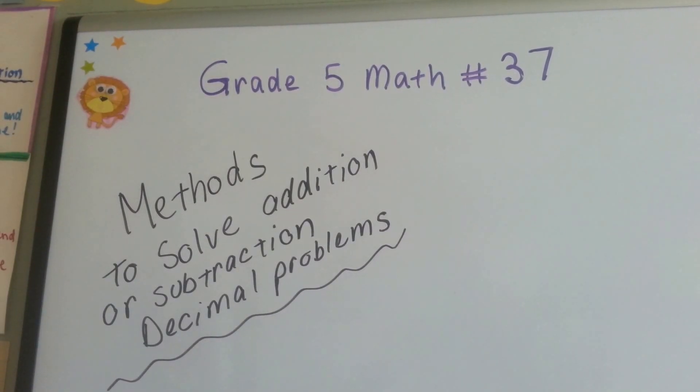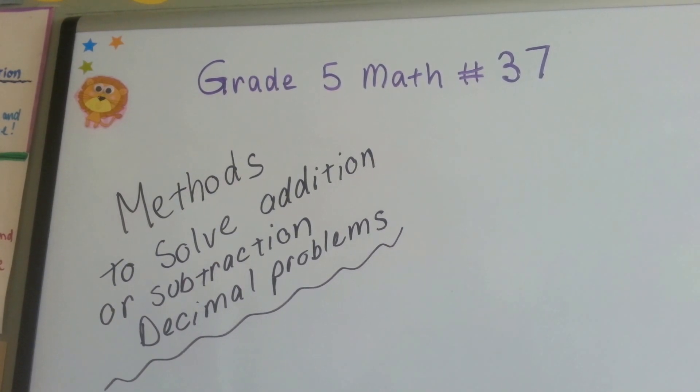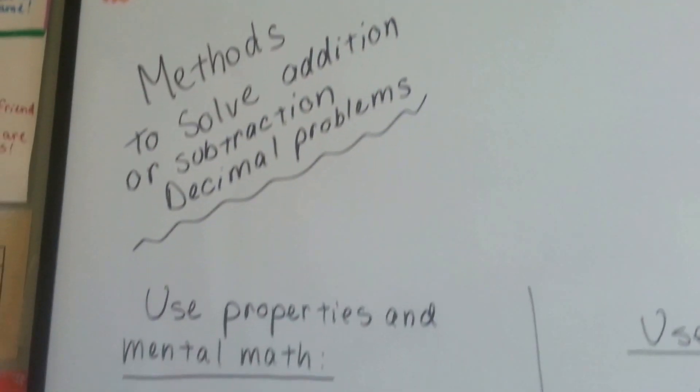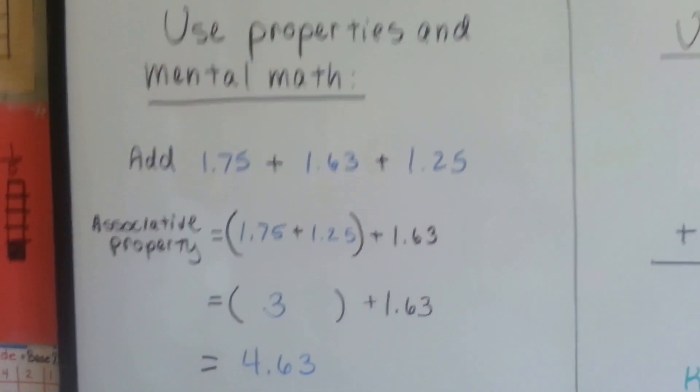Grade 5 math number 37, Methods to Solve Addition or Subtraction Decimal Problems. Okay, I've got a few methods for you. We can use properties and mental math.